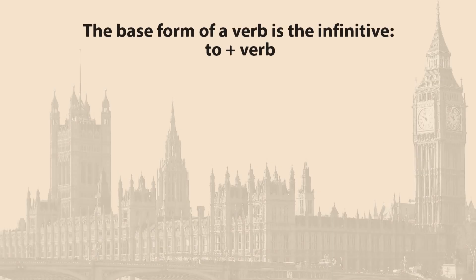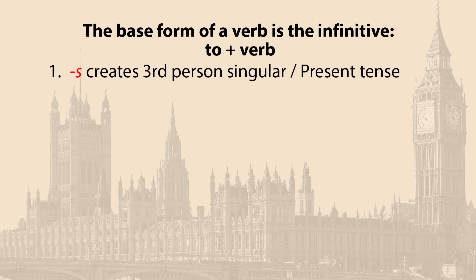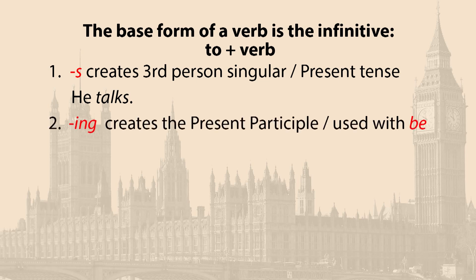Four suffixes added to a verb's base create all forms of a verb used in all tenses. The suffix -s creates third-person singular present tense — for example, 'he talks.' The suffix -ing creates the present participle used with 'be' — for example, 'he is talking.'